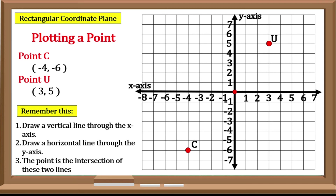We have Point T. Point T has a coordinate of negative 7, positive 2. Step 1: create a vertical line to negative 7. Step 2: a horizontal line to positive 2. Step 3: the intersection of these lines would be the position of our point, so Point T is located here.